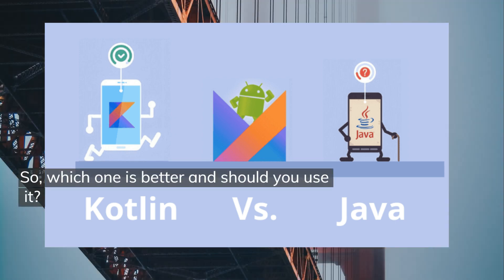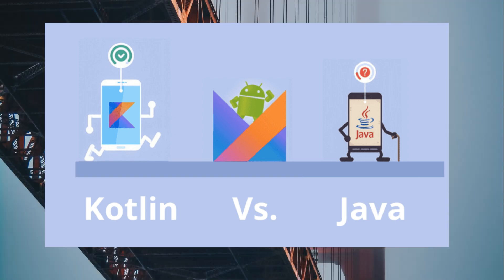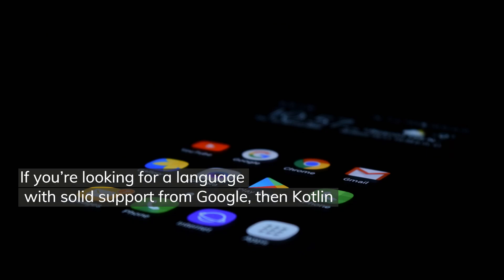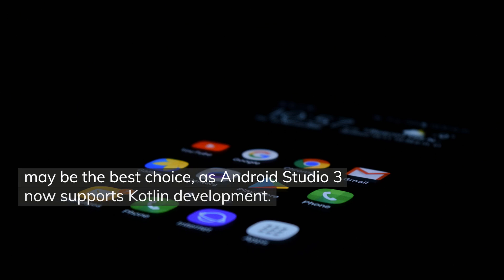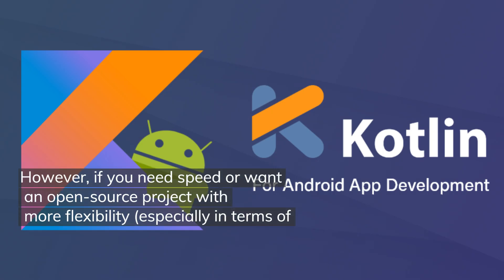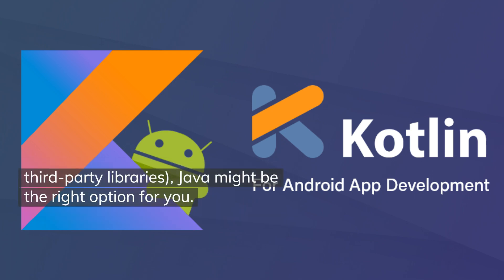So which one is better and should you use it? If you're looking for a language with solid support from Google, then Kotlin may be the best choice, as Android Studio 3 now supports Kotlin development. However, if you need speed or want an open source project with more flexibility, especially in terms of third-party libraries, Java might be the right option for you.